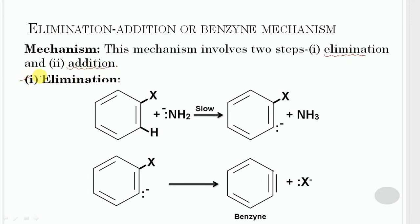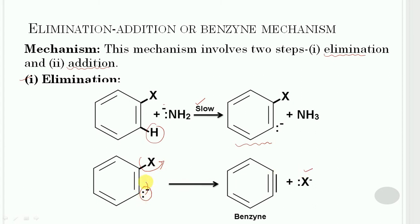In the elimination step, the amide ion abstracts a proton from the aryl halide to form a carbanion. This is the slow, rate-determining step in the benzyne mechanism. This is then followed by the loss of the halide ion from the carbanion, and the lone pair takes part in pi bond formation with the ring.